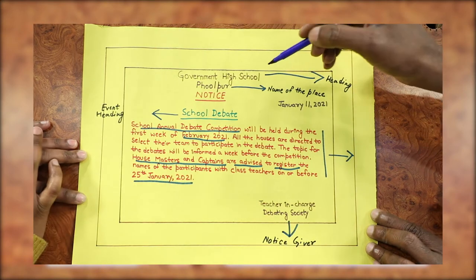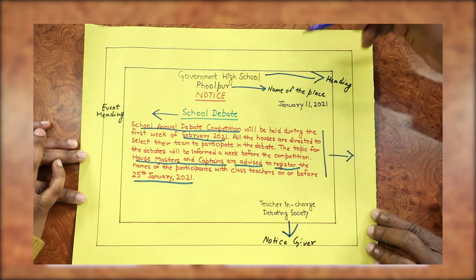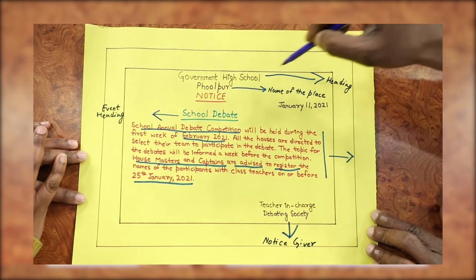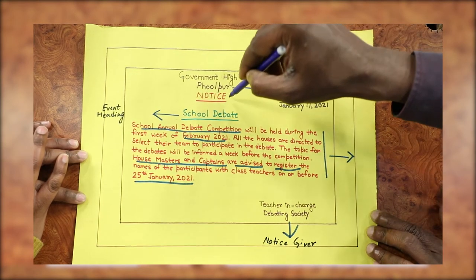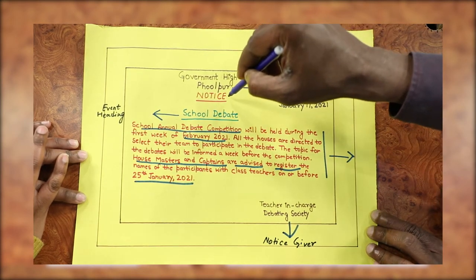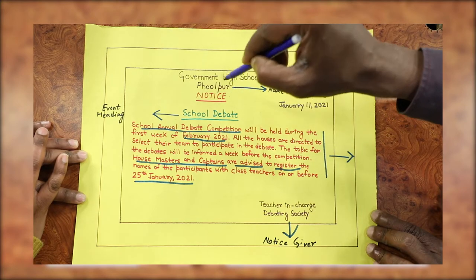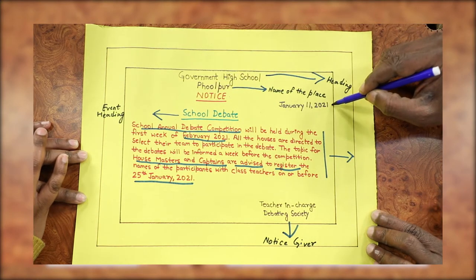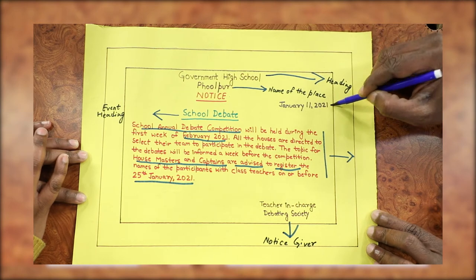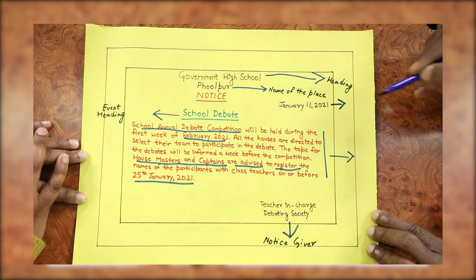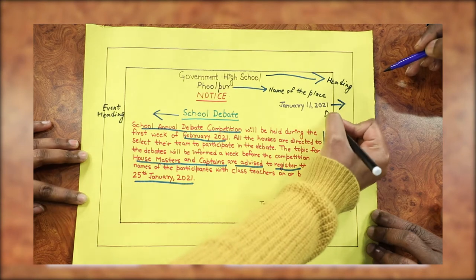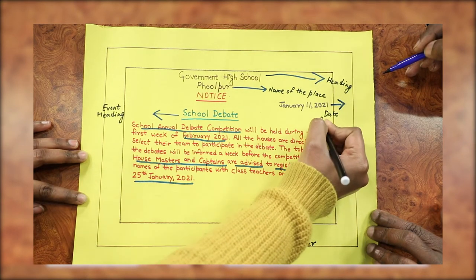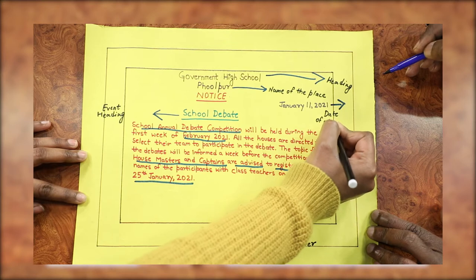Let us tell the learners again: first the name of the institution, then 'NOTICE' — you can write it in all capitals or lower case, no issue. And one important thing we have forgotten: the date of giving the notice. So we must write the date on which the notice is given.